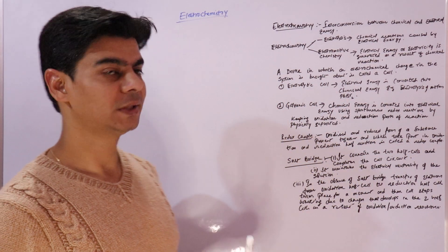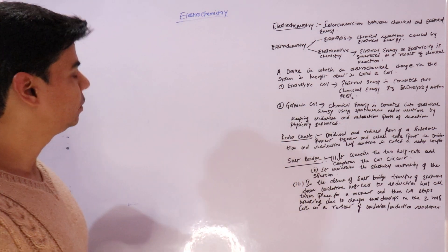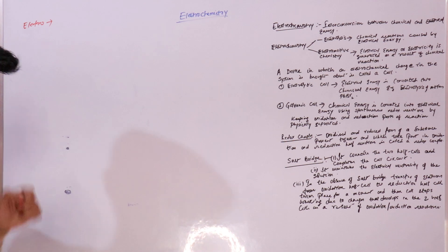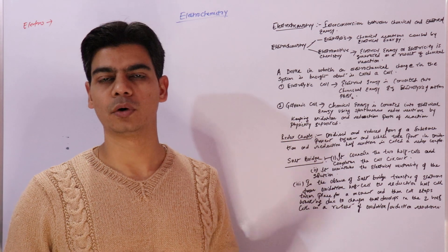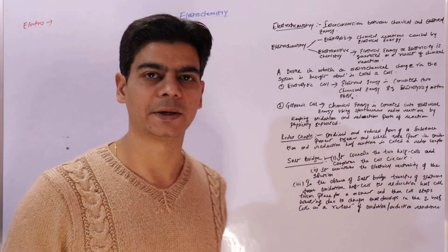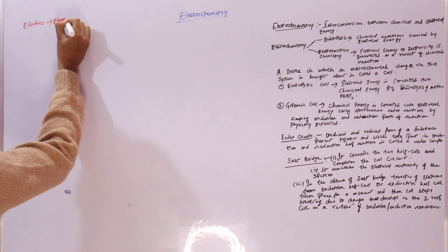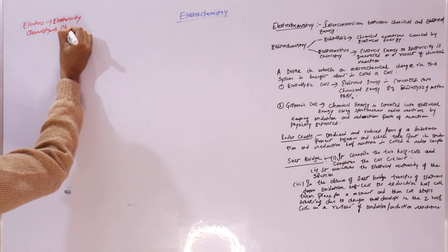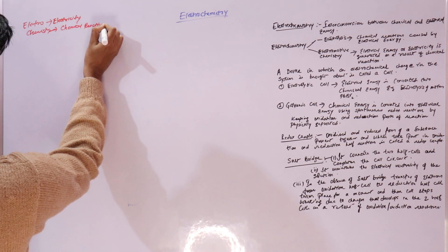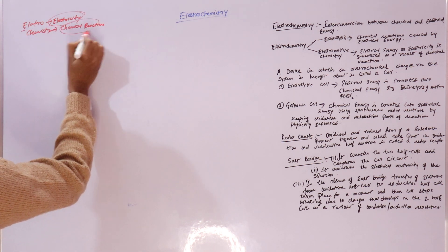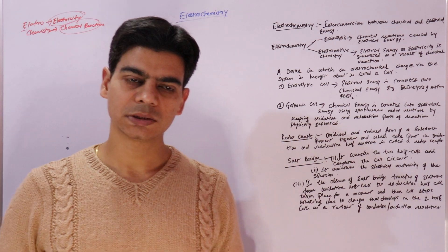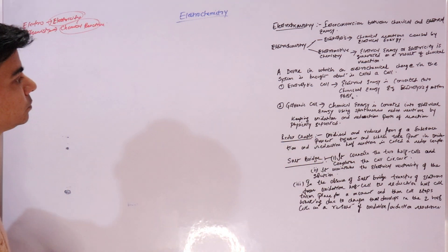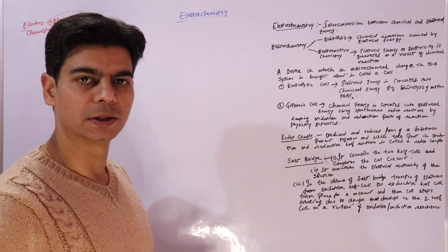In this video lecture, we will start with a new chapter: electrochemistry. Let's break up the word to understand it. 'Electro' stands for electricity or flow of electrons, and flow of electrons is nothing but electric current. 'Chemistry' is the study of chemical reactions. So electrochemistry covers chemical reactions that involve electricity.